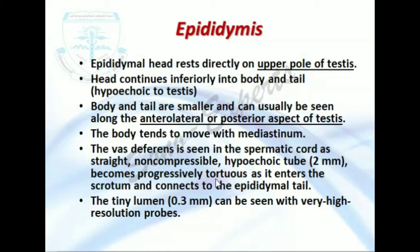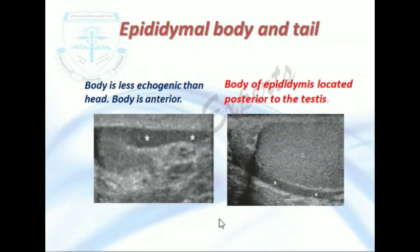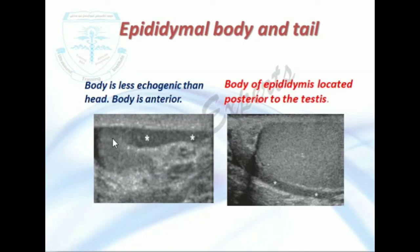The body tends to move with the mediastinum, whereas the vas deferens is seen in the spermatic cord. A straight, non-compressible hypoechoic tube becomes progressively tortuous as it enters the scrotum and connects to the epididymal tail. The tiny lumen of 0.3 millimeters can be seen with a high resolution probe. This is the body and tail, which is hyperechoic and lying posteriorly, and here it is lying anteriorly.